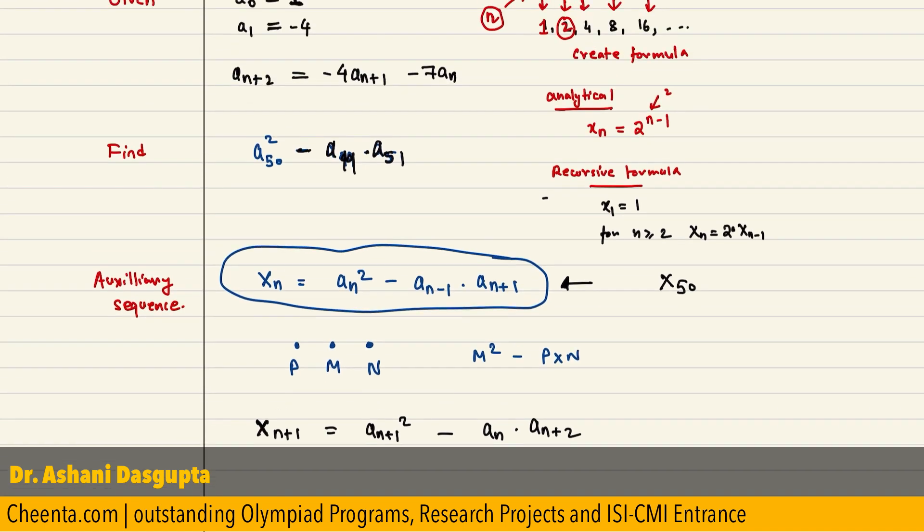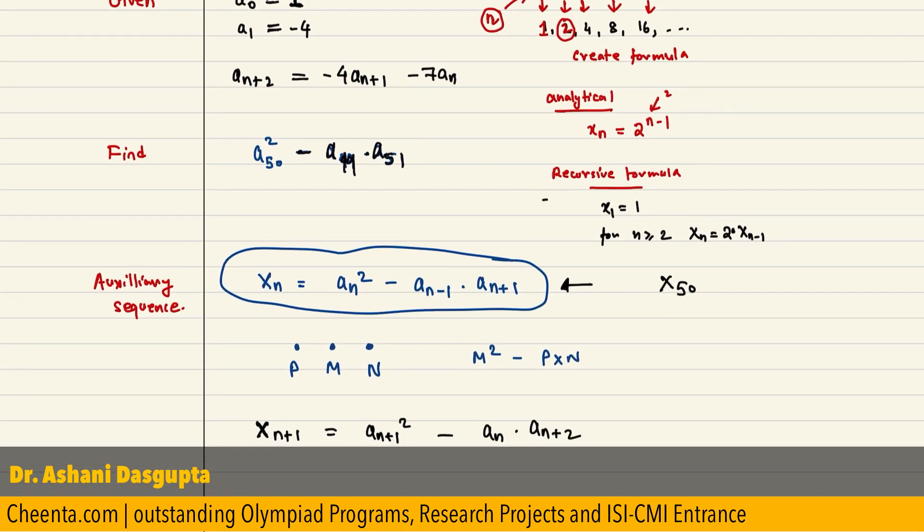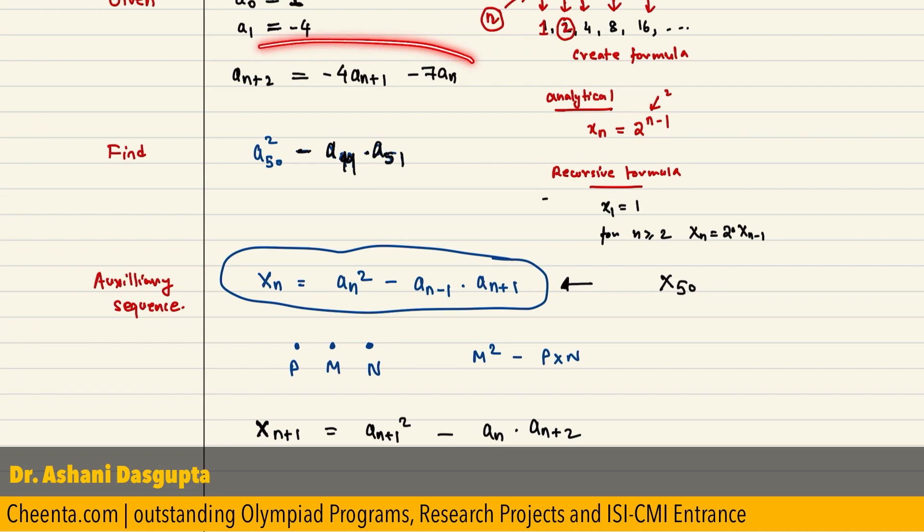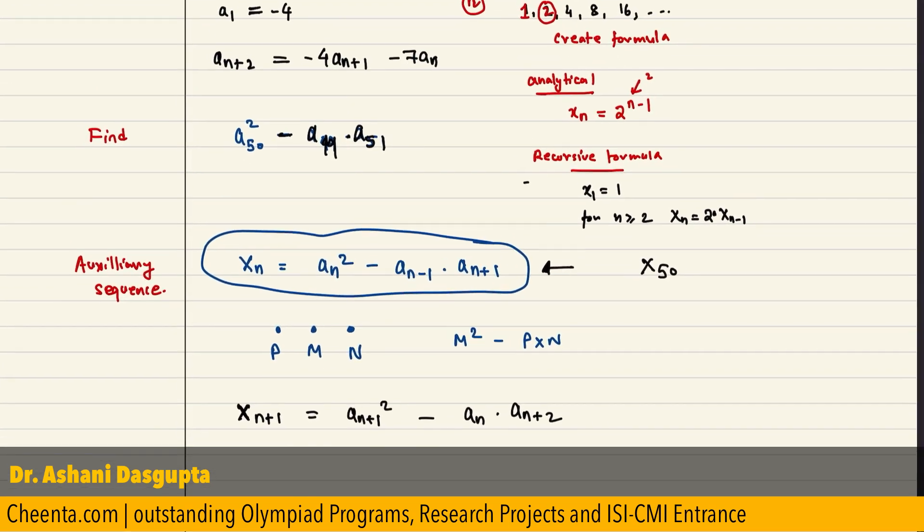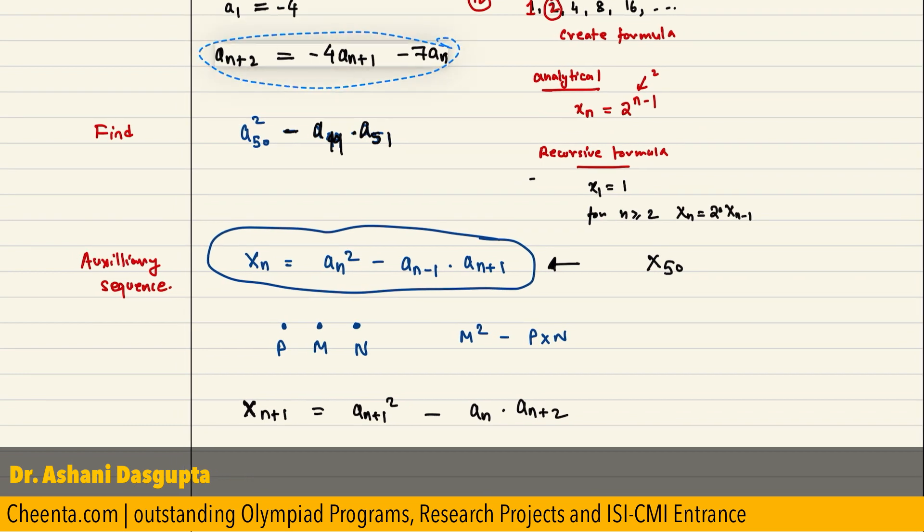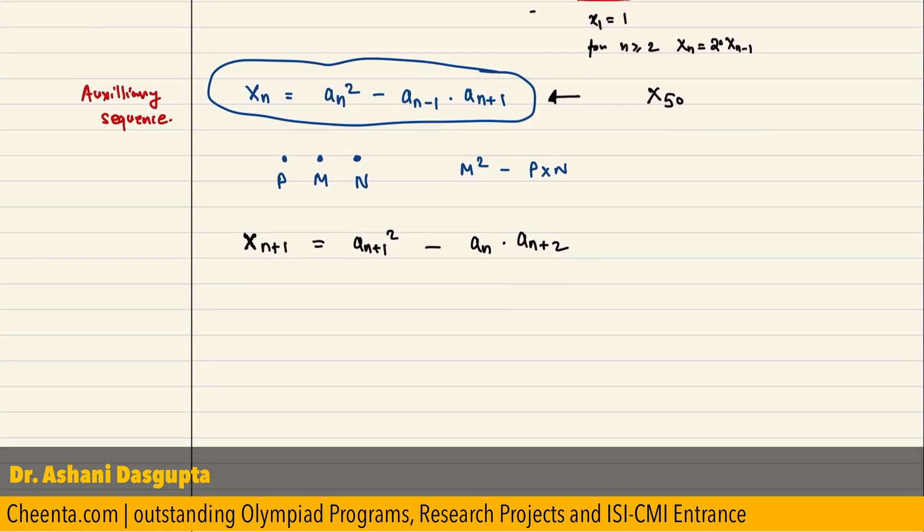All right. So, let us replace a(n+2) by this quantity. So, you already know a(n+2) is this. That's given in the problem. Right.